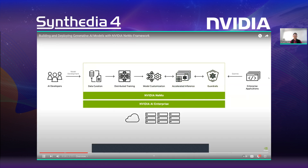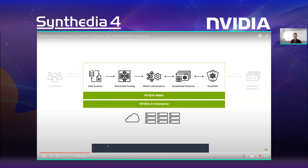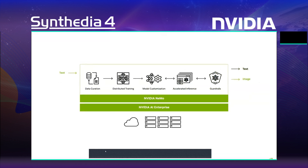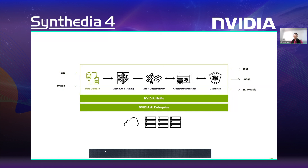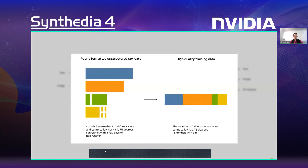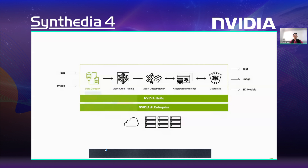The framework also supports multi-modality including text-to-text, text-to-image, and text-to-3D models, and image-to-image generation. NEMO simplifies data curation by extracting, deduplicating, and filtering information from a large corpus of unstructured data at scale.